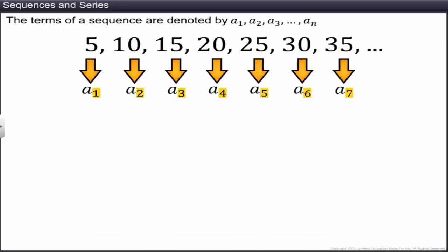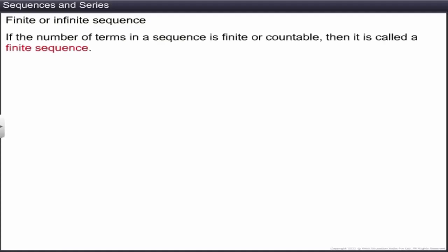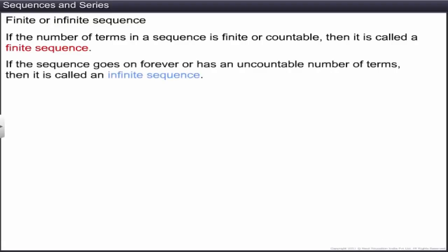The subscripts denote the position of the terms in a sequence. The nth term, denoted by aₙ, is also known as the general term of the sequence. A sequence is finite or infinite depending upon the number of terms in it. If the number of terms is finite or countable, it is called a finite sequence; if it goes on forever, it is called an infinite sequence. The sequence of natural numbers and multiples of 5 are infinite, while the first 5 even numbers and squares of first 5 natural numbers are finite sequences.